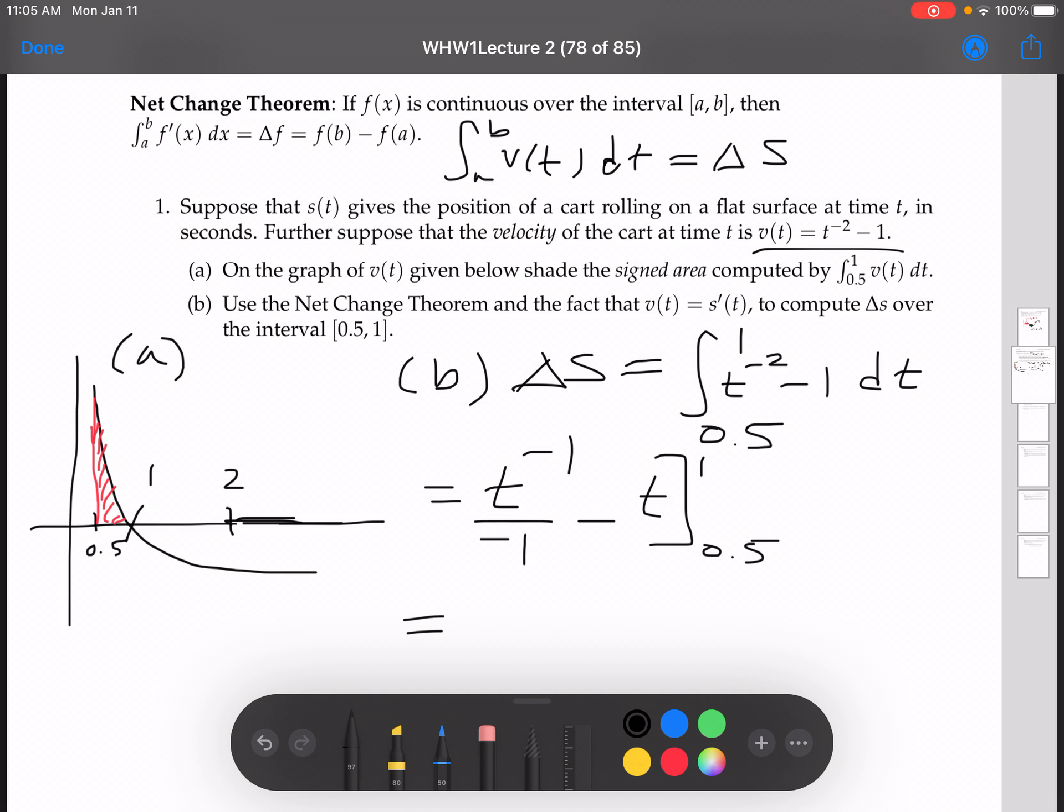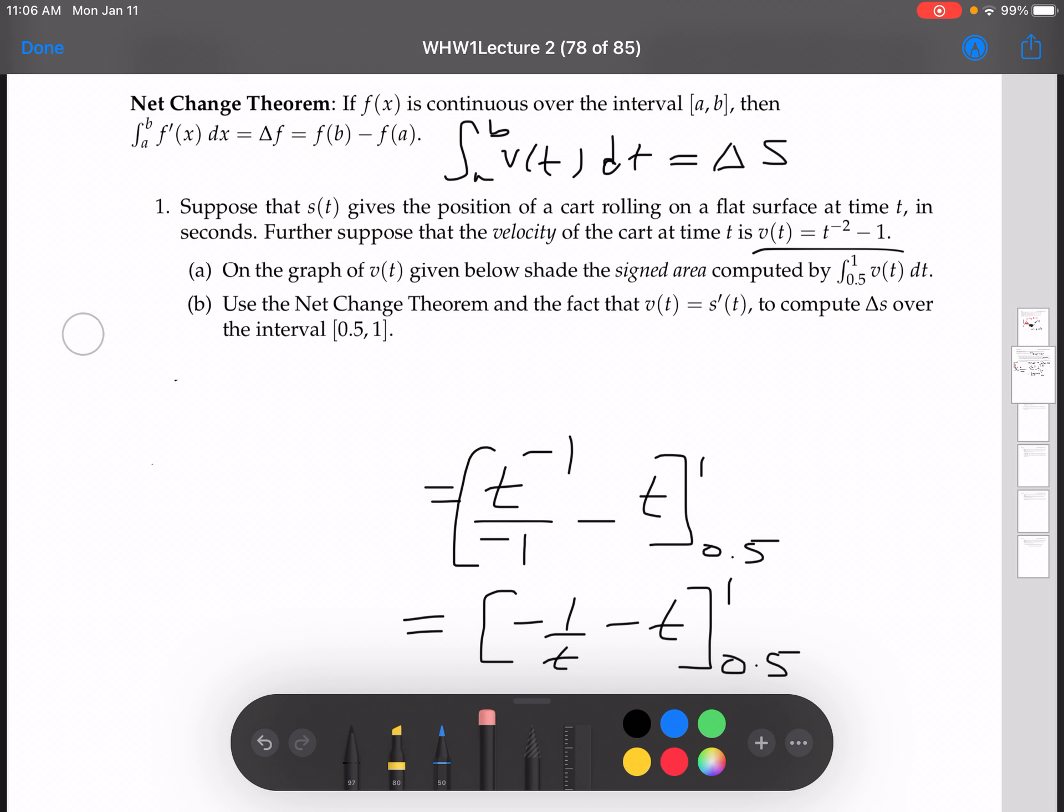Let's see, that's negative 1 over t minus t, evaluated from 0.5 to 1. I did that work already. Well, let's see, maybe I should go over that just for a little review. Okay. I'm going to go back up there now.